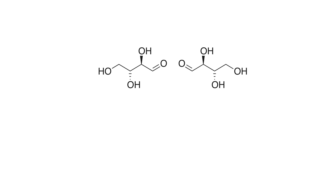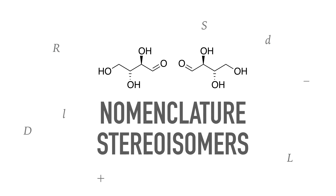Molecules with one or more stereocenters have a so-called pair of enantiomers. Unfortunately, there are many methods to define such molecules. This often leads to a lot of confusion among students. Today I will explain which nomenclature you can use in which situation.